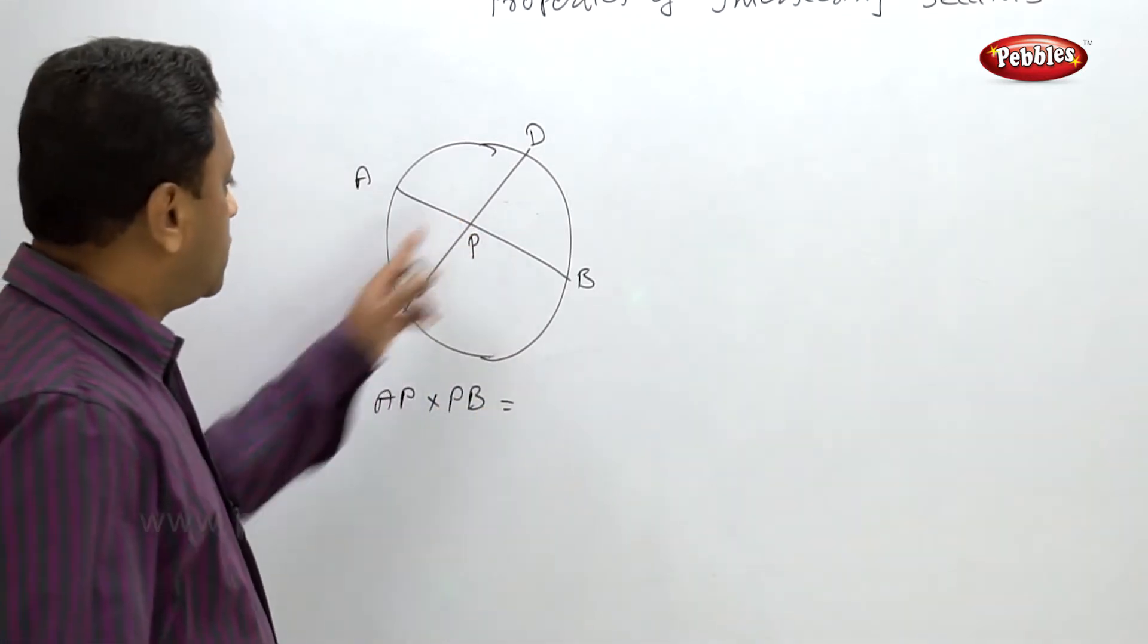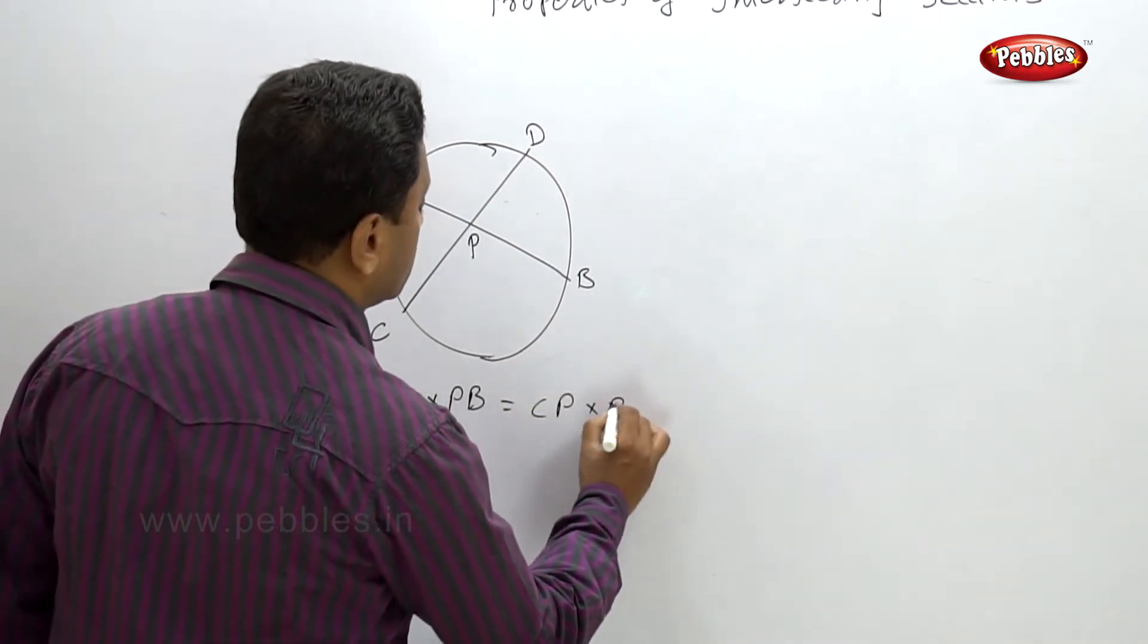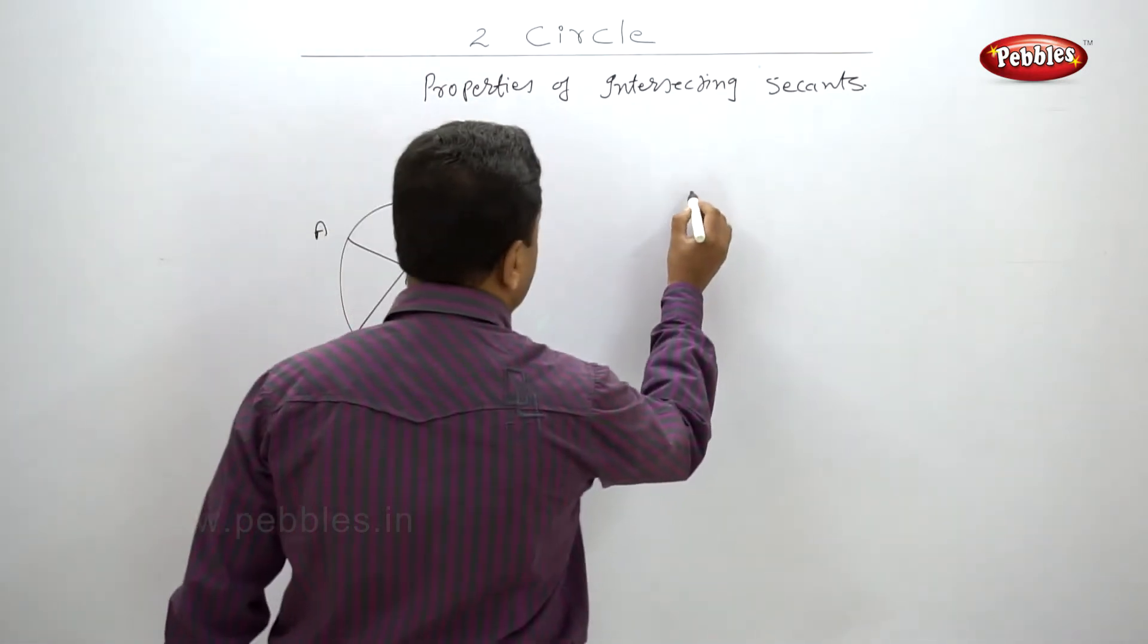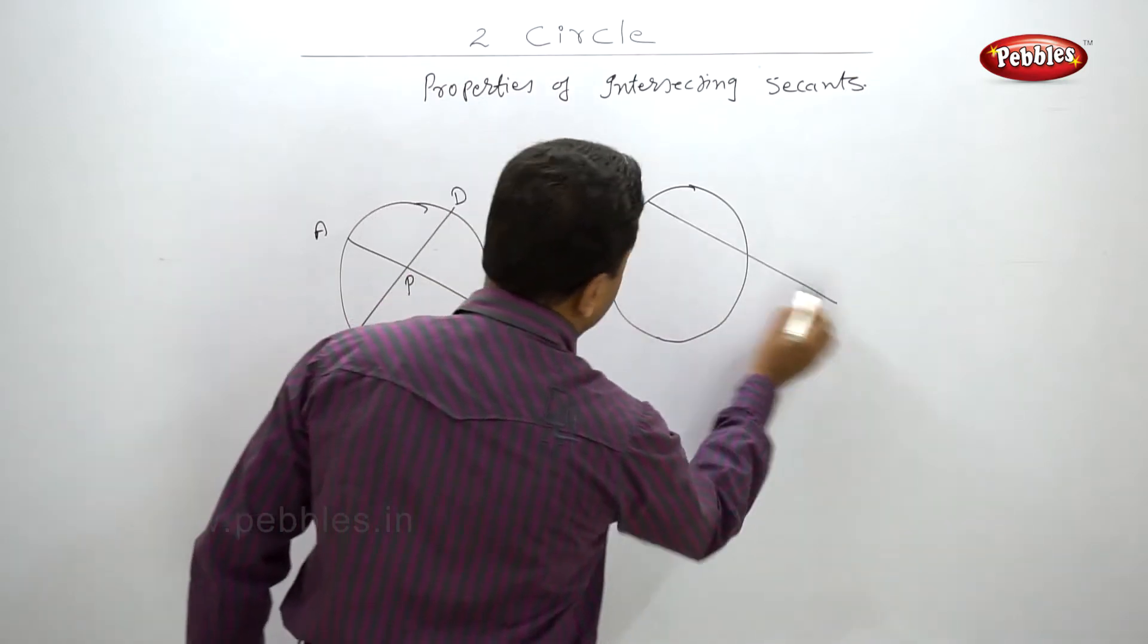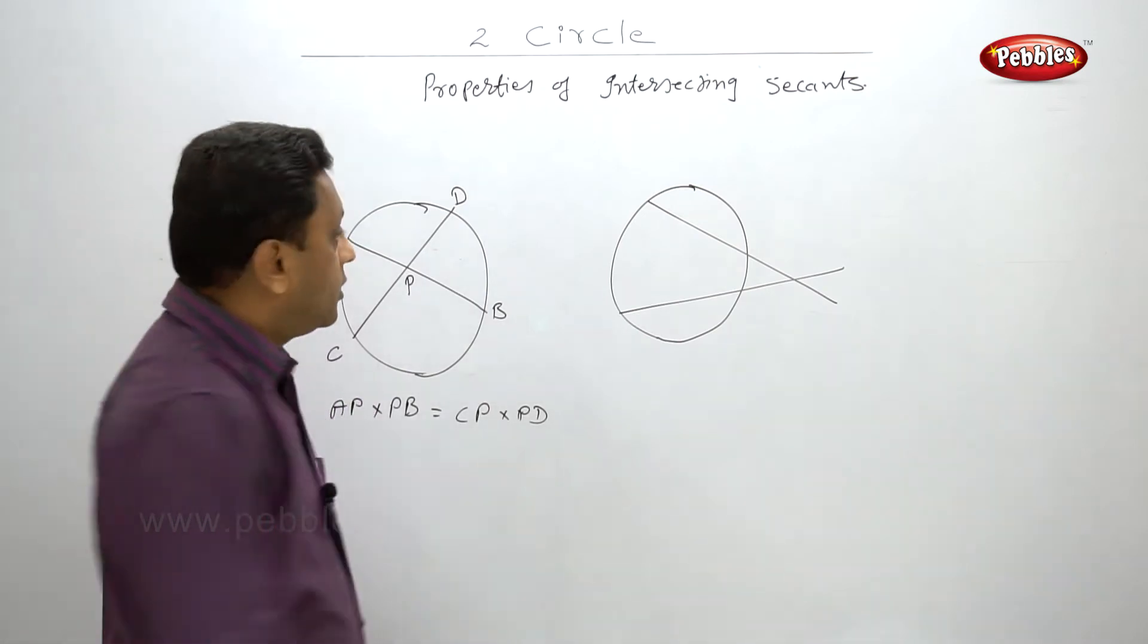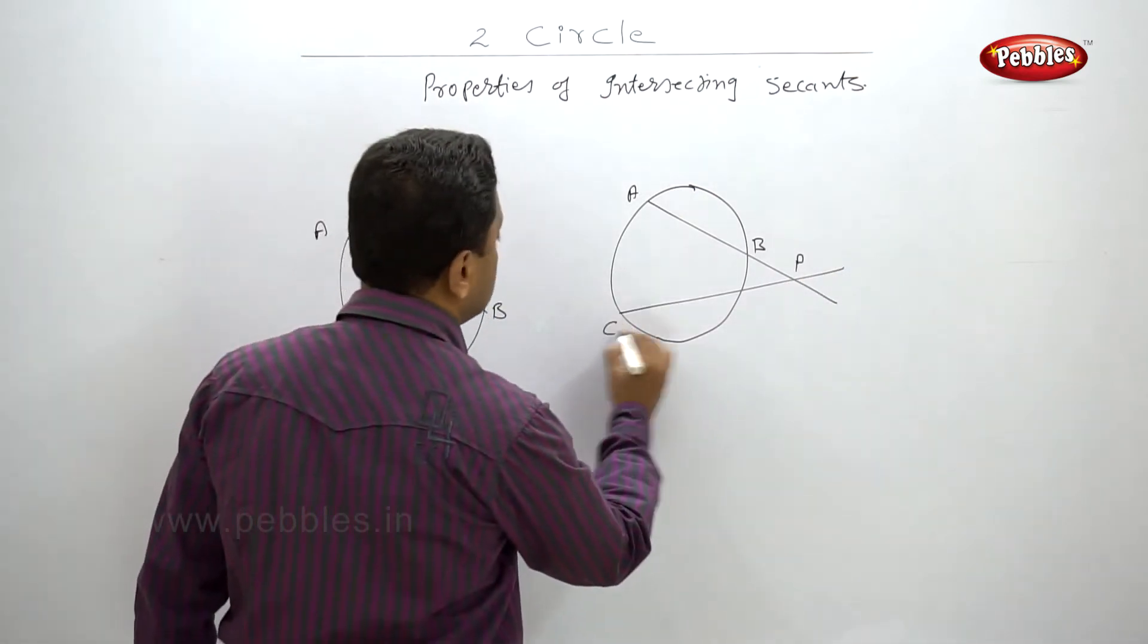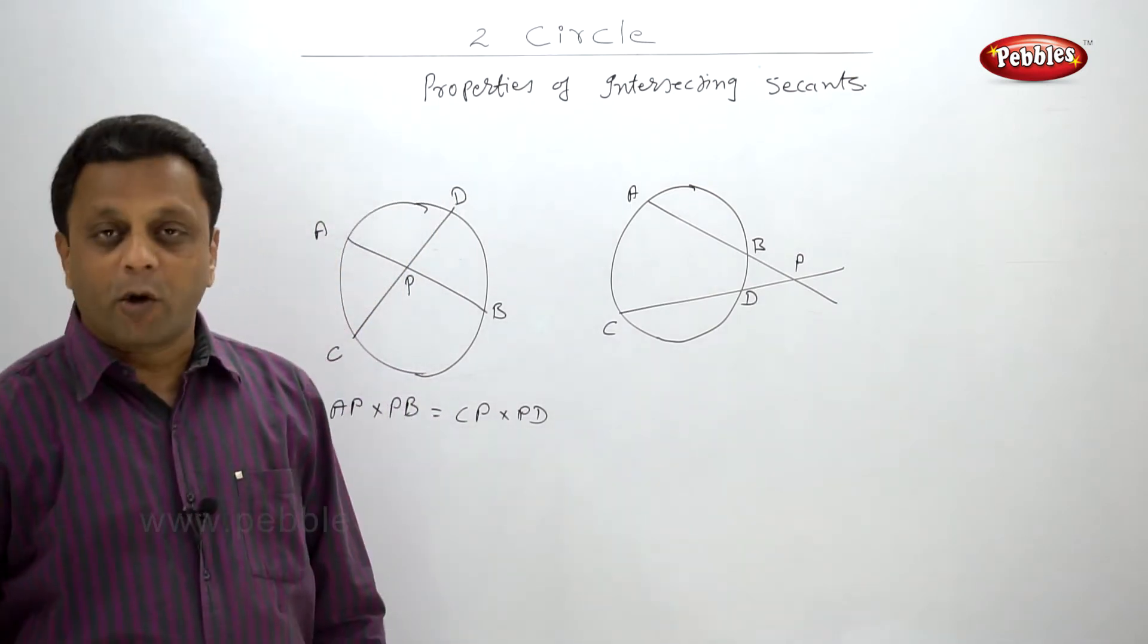Now let us see the second condition if these secants are intersecting outside the circle. Let this be circle and these are two secants which are intersecting outside the circle. I will say that this is AB, this point of intersection P, and this is C and D.